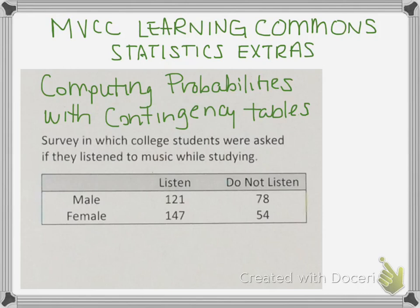At the bottom of the screen I have what's called a contingency table, or what might also be referred to as a two-way table. It has two different types of information and numbers that are cross-referenced between them. This table is based off of a survey in which college students were asked if they listened to music while studying.